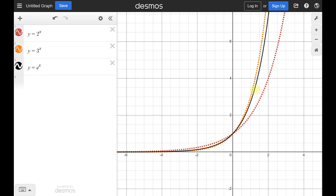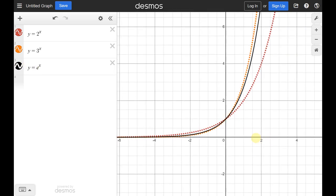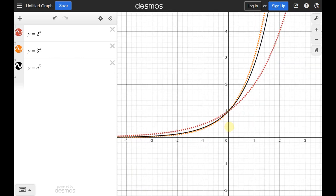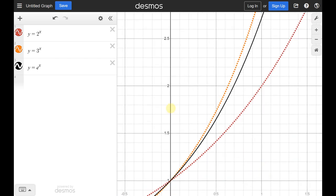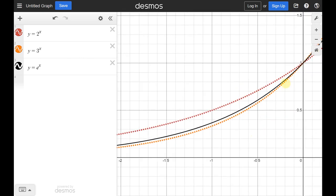Okay, so e to the x falls just in between these two other graphs. And maybe it's a little hard to see. So I'm going to just zoom in a little bit just so we can also appreciate it. So yeah, so e to the x, you can see that it's traveling closer to the orange line, which was the 3 to the x line. And it's doing that on both sides.